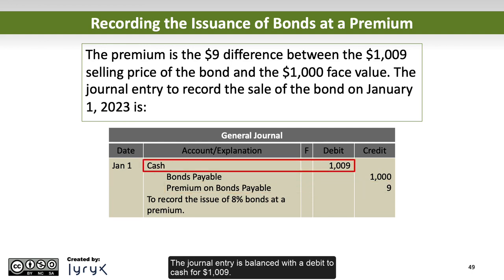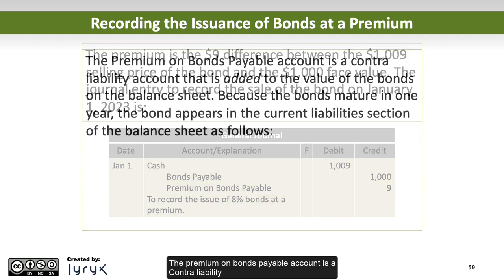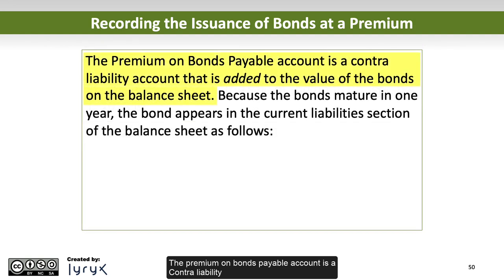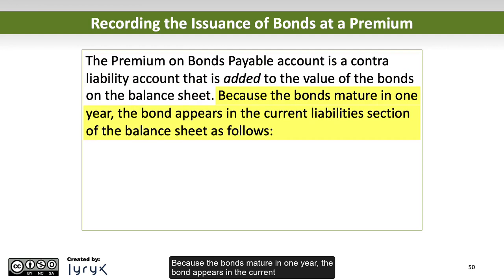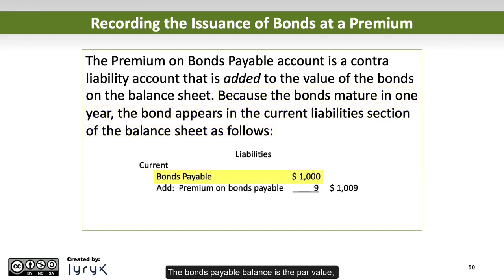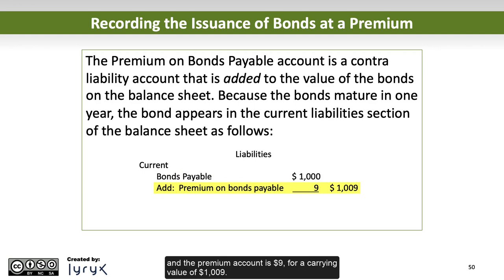The journal entry is balanced with a debit to cash for $1,009. The premium on bonds payable account is a contra liability account that is added to the value of the bonds on the balance sheet. Because the bonds mature in one year, the bond appears in the current liability section of the balance sheet. The bonds payable balance is the par value and the premium account is $9, for a carrying value of $1,009.